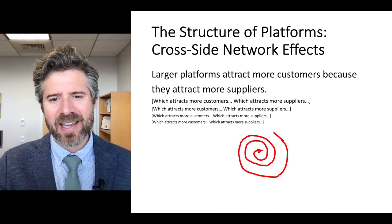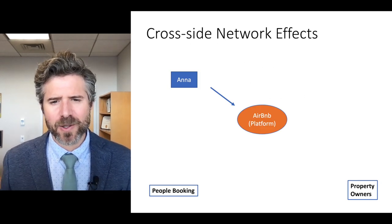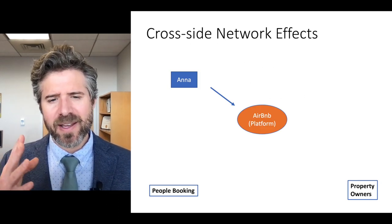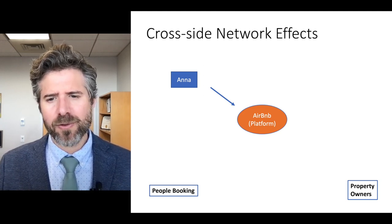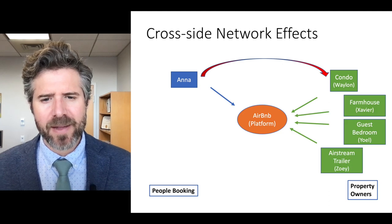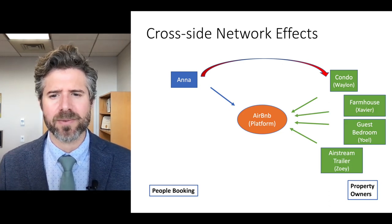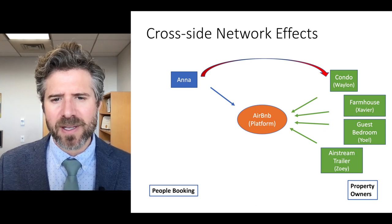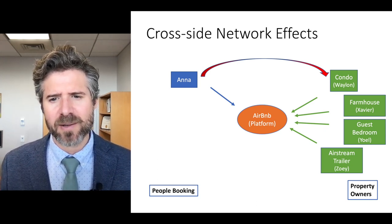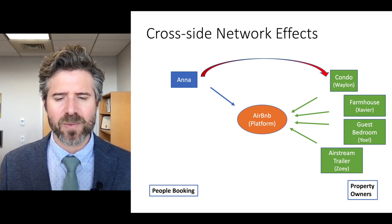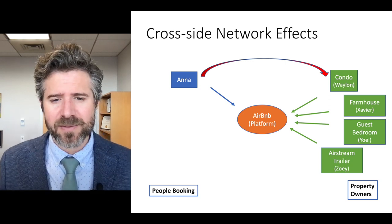In Airbnb's case, let's say Anna is an early adopter and finds herself in a market where there are four local Airbnbs and no other customers. Anna's going to benefit at least two ways: from the availability, and also competition is likely to drive down prices. So Anna's likely to get a really good deal on her Airbnb.